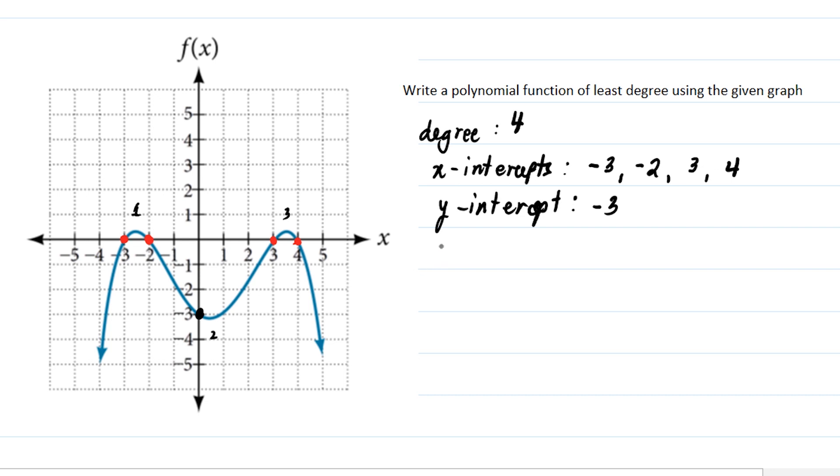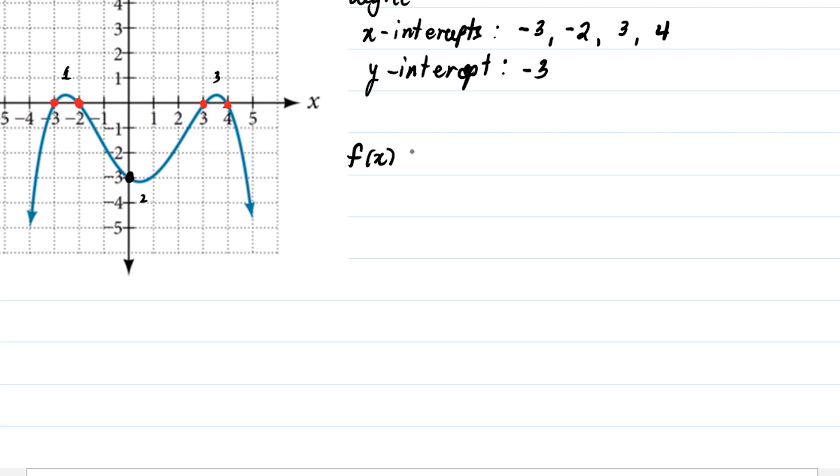Let's now form our polynomial. We have f(x) is equal to... if the x-intercept is negative three, that means the factor is x plus three. Remember, x-intercepts are also the values of your roots if this is an equation, or zeros if this is a function. We also have x plus two, x minus three, and x minus four. And we have to put 'a' here.